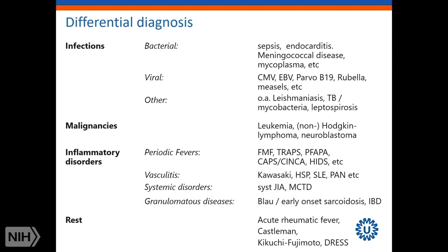This comes from the fact that the differential diagnosis in these children, who are very sick at onset, is very broad. You should think of a variety of infections — both bacterial and viral — but also really specific infections like leishmaniasis. You should also think of malignancies and other inflammatory disorders, including the periodic fever syndromes.